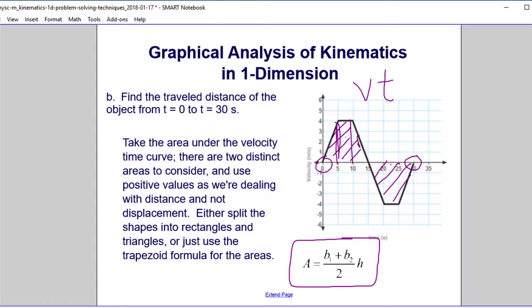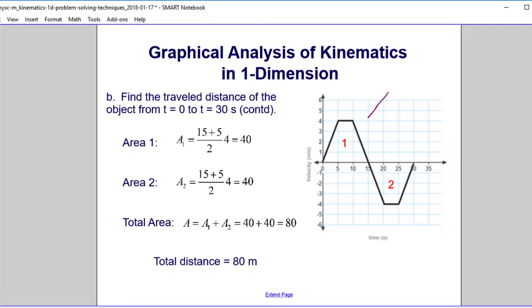It's base 1 plus base 2, divided by 2 times the height. So the area of our first shape over here, one base is 15, the top is 5, divide by 2, the height is 4. So that area is 40. And 2 is just the mirror image of it. So the area of this is also 40.